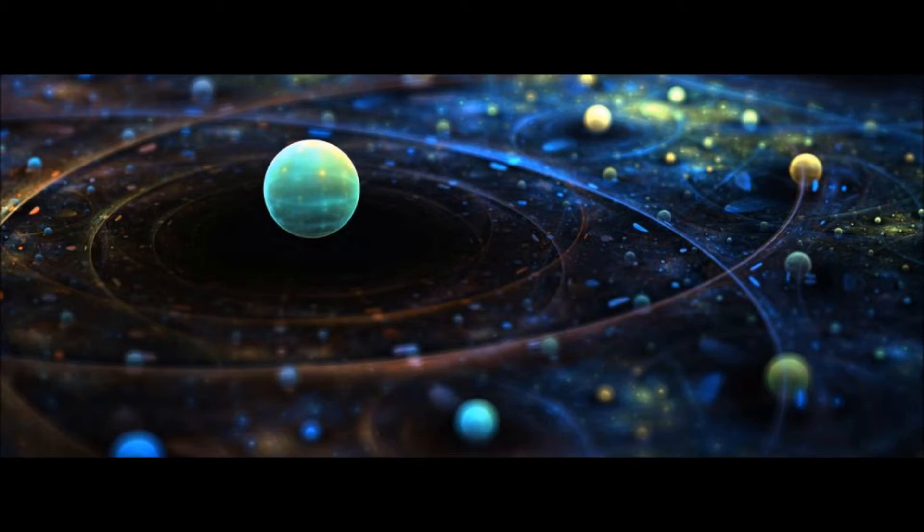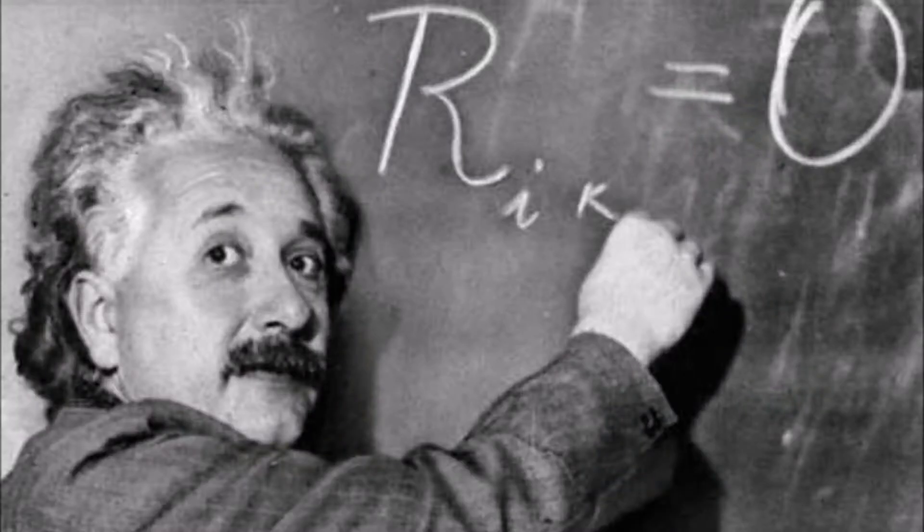In the last video, we showed that the geodesic equation coupled with the vanishing of the Ricci tensor was equivalent to Newton's equations of gravitation, provided the gravitational field is weak and the velocities are much smaller than the speed of light. We tentatively concluded that Rij equals zero is the correct theory of gravitation in vacuum.